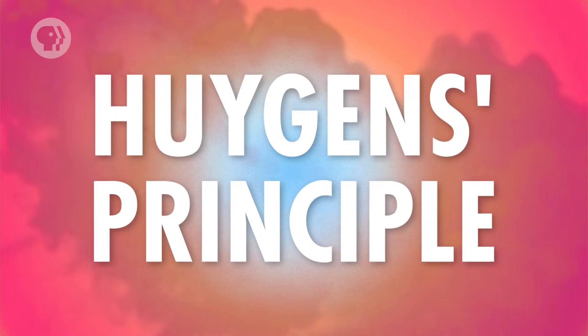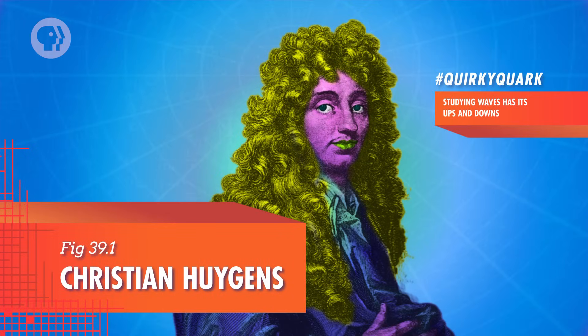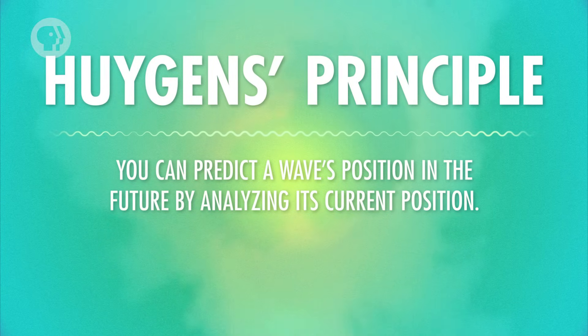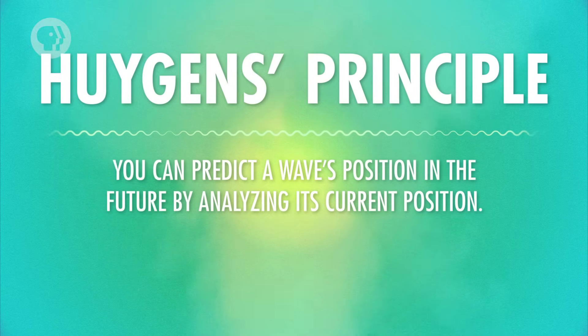One of the most important reasons that light acts the way it does is known as Huygens' Principle. Christian Huygens was a 17th century Dutch physicist who believed light acted as a wave. He came up with a way to predict how a wave will spread out, and we still use his method today. Huygens' Principle says that you can predict a wave's position in the future by analyzing its current position. All you have to do is think of each point on the wave as a source of its own, tinier wave.